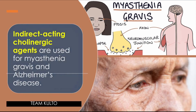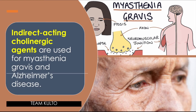Indirect acting cholinergic agents are used for myasthenia gravis and Alzheimer's disease. Myasthenia gravis is a chronic muscular disease caused by a defect in neuromuscular transmission — an autoimmune disease in which antibodies to acetylcholine receptors are made, causing progressive weakness and lack of muscle control. Alzheimer's disease is a progressive disorder of neural degeneration that leads to marked loss of memory and ability to carry out activities of daily living.